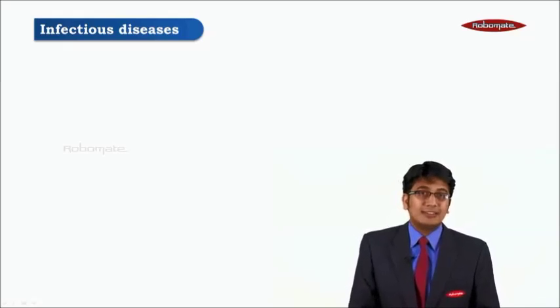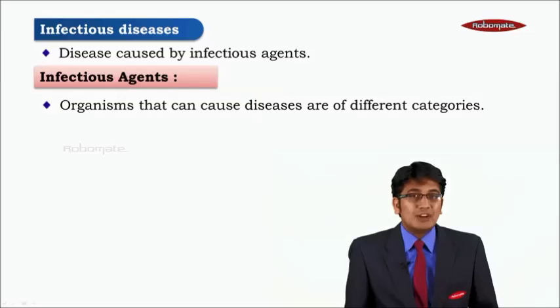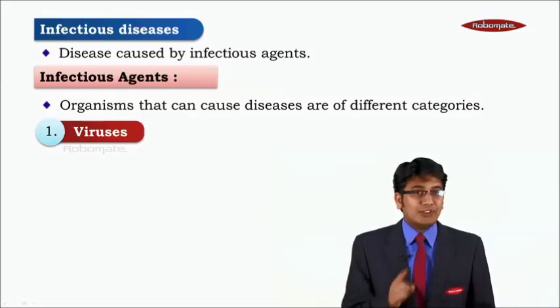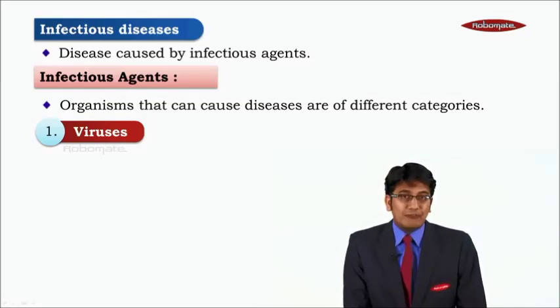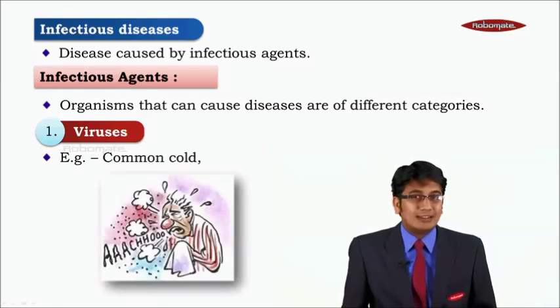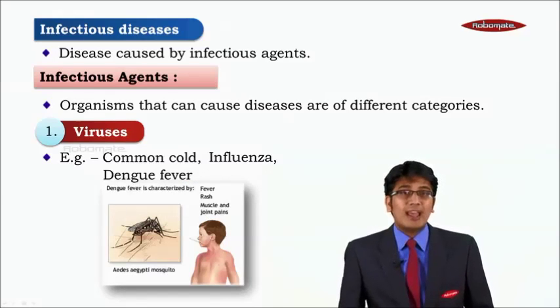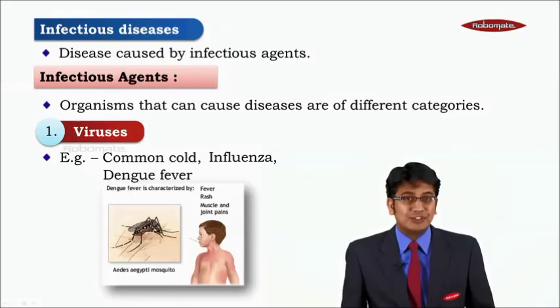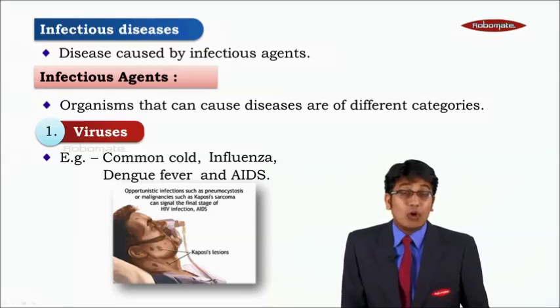Infectious diseases are caused by a germ, a pathogen, or a microorganism — bacteria, virus, worm, and so on. Organisms that can cause disease are of different categories. Number one: viruses. They are very dangerous and deadly. Diseases caused by viruses include the common cold, influenza, dengue fever, and the most dangerous disease in the world — AIDS, caused by the HIV virus, known as Acquired Immunodeficiency Syndrome caused by the Human Immunodeficiency Virus.